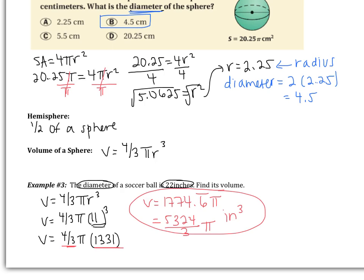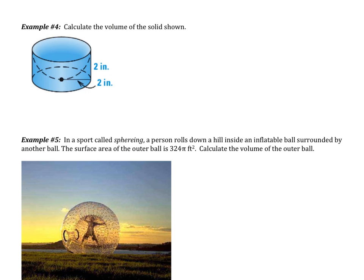Let's turn the page and look at another example. So example 4, it says calculate the volume of the solid shown. We're going to notice two figures here. So you might have difficulty seeing the figure right up close. But what we have is a cylinder. And then we cut out a hemisphere.